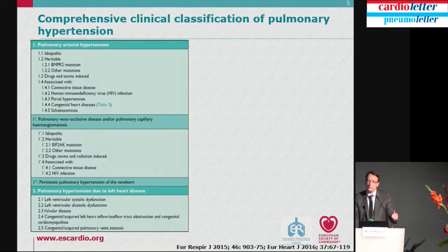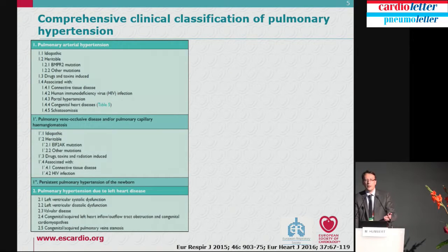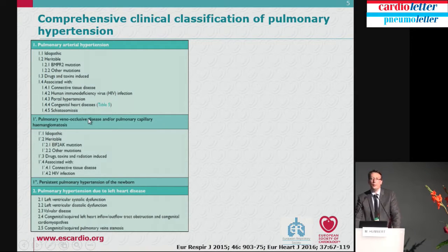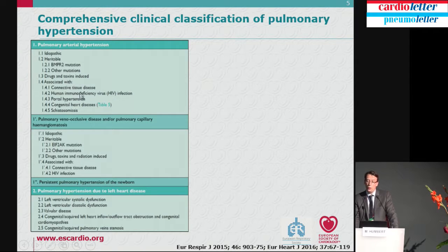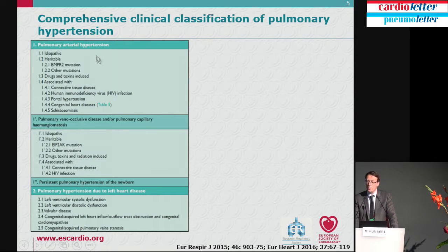We have done a good job since many years in defining patients according to common pathomechanisms and common management. Group 1 PH is characterized by remodeling of the small pulmonary arteries. It can occur without any cause, with heritable causes or gene mutations, or with associated conditions like scleroderma, portal hypertension, HIV infection, congenital heart disease, or schistosomiasis — common in Brazil. Despite different backgrounds, all these patients share remodeling of the small pulmonary arteries.